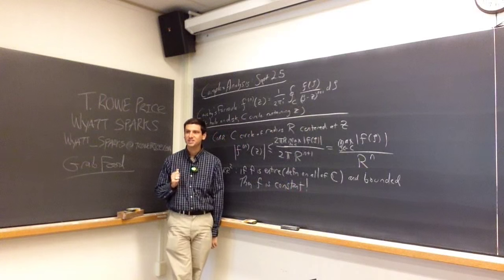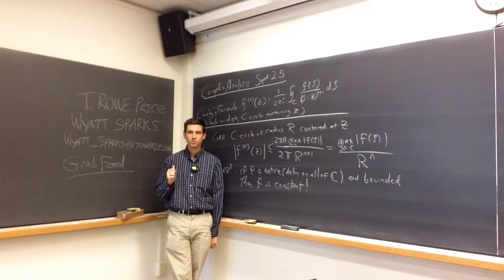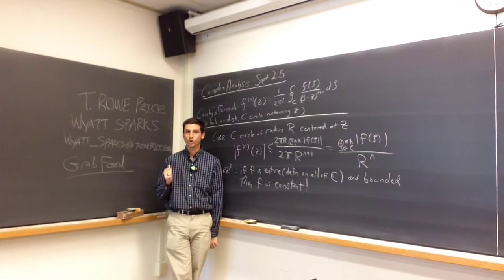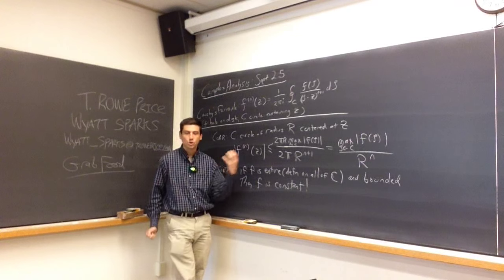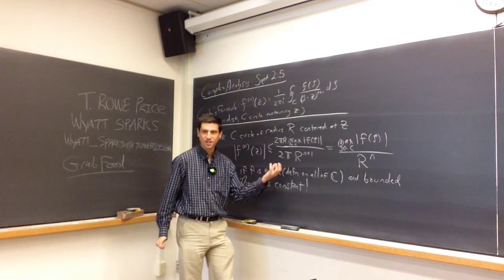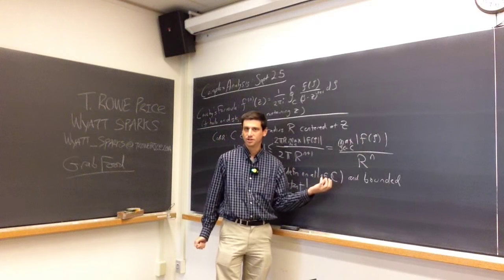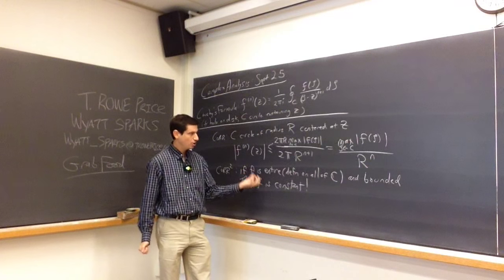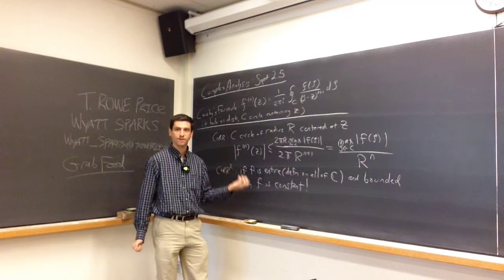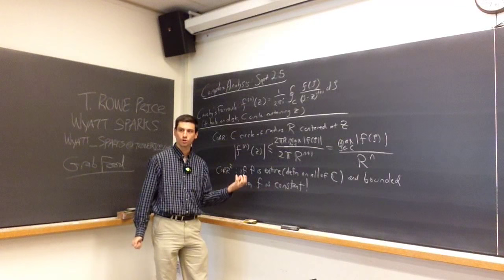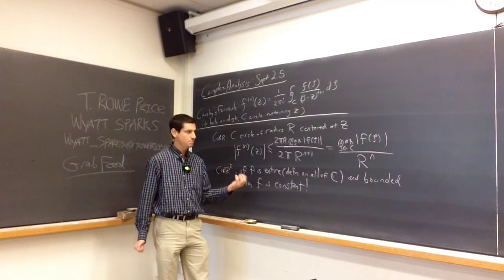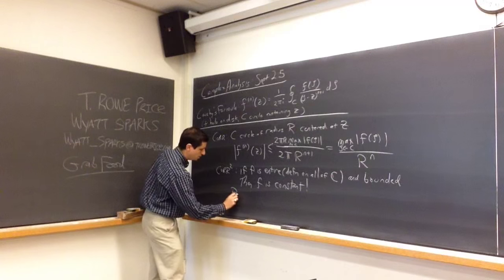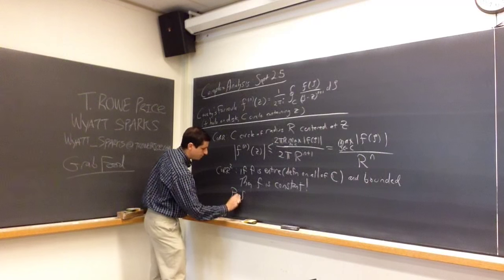This is strikingly different than the real case. In the real case we have functions like sine and cosine, or 1 over 1 plus x squared — a slew of functions that are bounded but not constant as a function of a real variable. In a complex variable, if your function is defined everywhere on all of ℂ and is bounded, it must be constant.